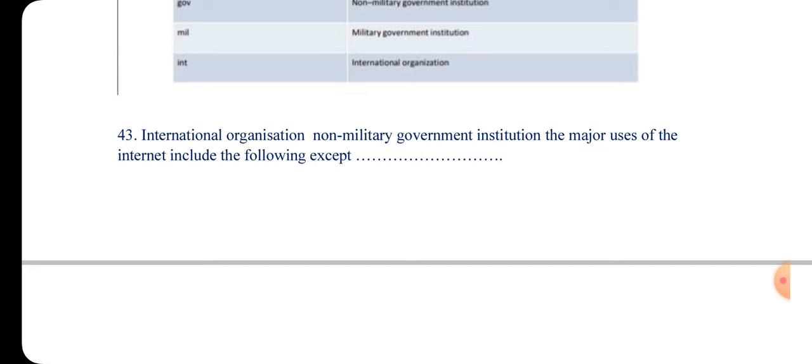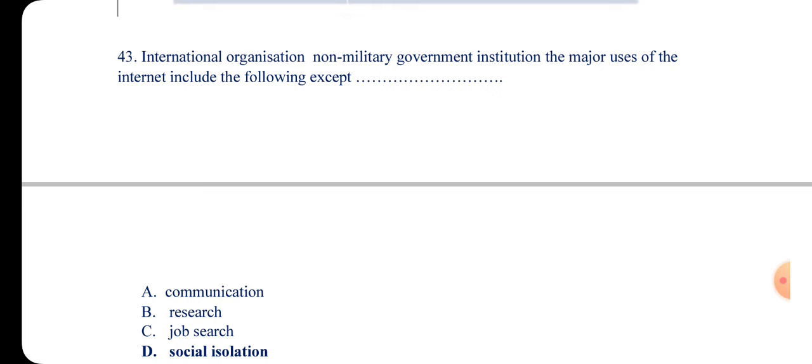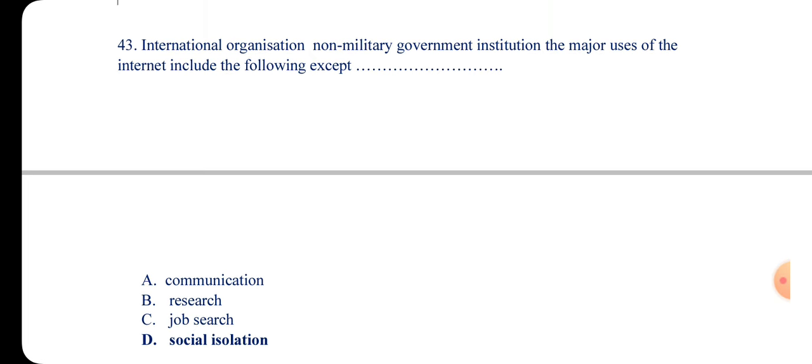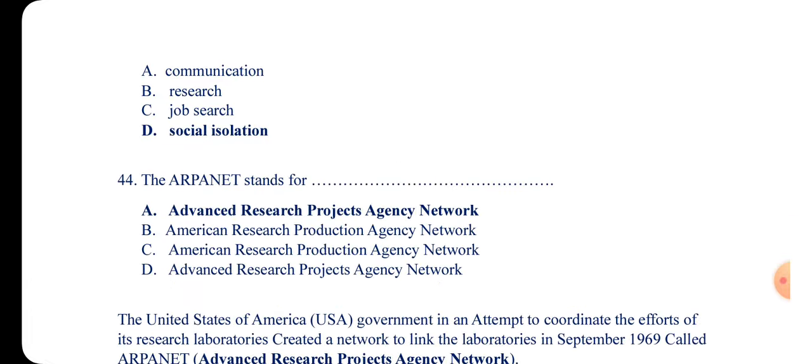Question 43 covers international organizations and non-military government institutions and asks about the major uses of the internet EXCEPT. This question was answered in the first video — please go and watch it there. The answer is available in Part 1.